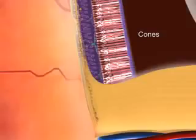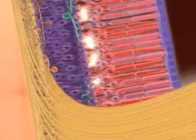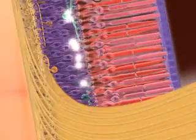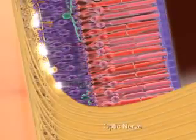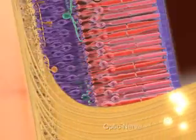The highest concentration of cones is in the fovea centralis. The rods and cones synapse with bipolar cells, which then synapse with the ganglia cells, whose axons form the optic nerve.